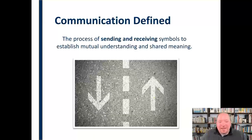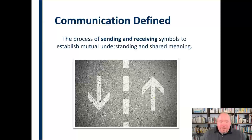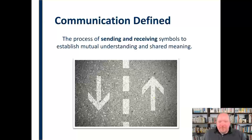Communication is also about sending and receiving symbols, which is why we call them communicator A and communicator B. Traditionally they had been called the sender and receiver, but in fact both parties — whether it's one person or many people — are both sending and receiving at the same time. It's not just one or the other. This is a two-way process.